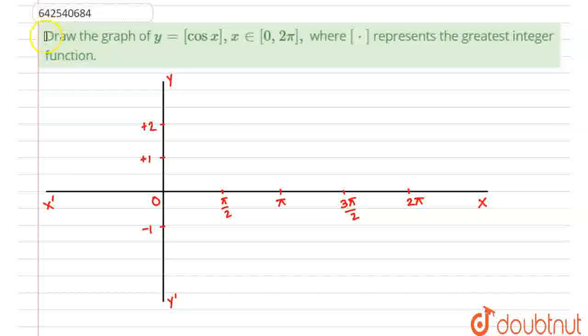Hello everyone, let's start with this question. This question says, draw the graph of y equals box of cos x, x belongs to 0 to 2π. Box represents the greatest integer function less than or equal to x.